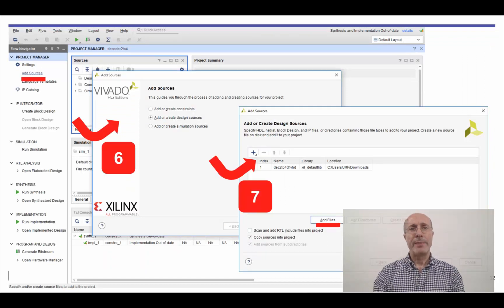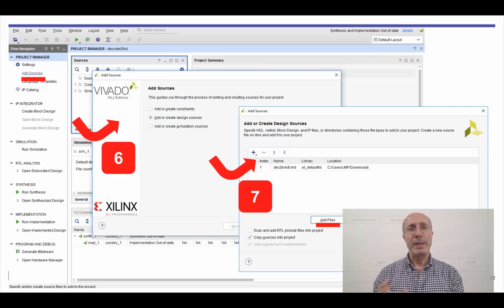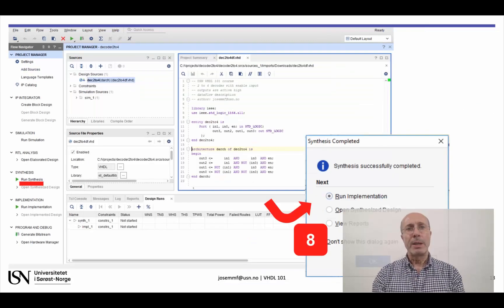We will now add the VHDL design file to our project. Select Add Sources on the left. Make sure that you have selected the Add or Create Design Sources option and click on Add Files. I have already selected the file shown in the previous slide, and all that is needed now is to click on Finish to conclude this step. We can double-click on the file name in the Sources window and its content will show in a separate tab on the right, as you see here.